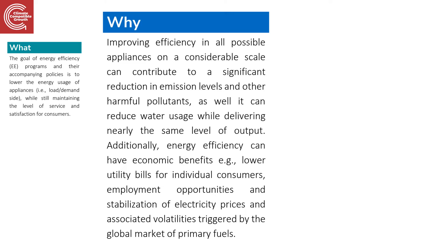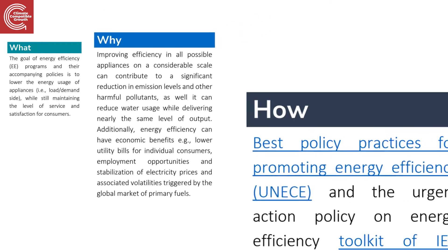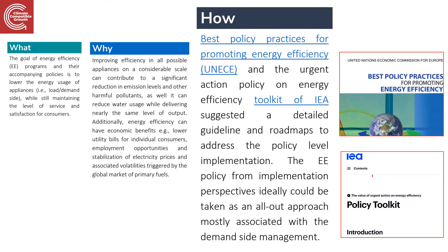But how do we implement energy efficiency policies, and what are the implementation matrices as well as proven roadmaps for this? To promote energy efficiency practices at a country or state level, the United Nations has published several reports. One of them is 'Best Policy Practices for Energy Efficiency Promotion,' downloadable via the link in the description. Another important report is the 'Urgent Action Policy on Energy Efficiency' toolkit by the IEA, which provides detailed guidelines and roadmaps for policy-level implementations.